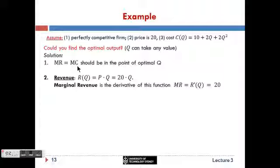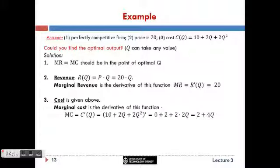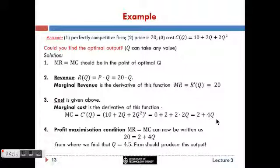For that we need to find marginal revenue and then marginal cost. Marginal revenue is the derivative of the revenue function, and the revenue function is 20 times q, so the derivative is 20. That's what we already knew — marginal revenue equals price in a competitive market. The cost function is given, so marginal cost is computed as its derivative, which gives 2 plus 4q. So now we have three pieces of information: the profit maximization condition MR=MC, marginal revenue equals 20, and marginal cost equals 2 plus 4q.